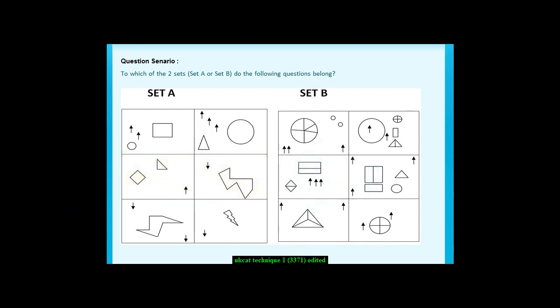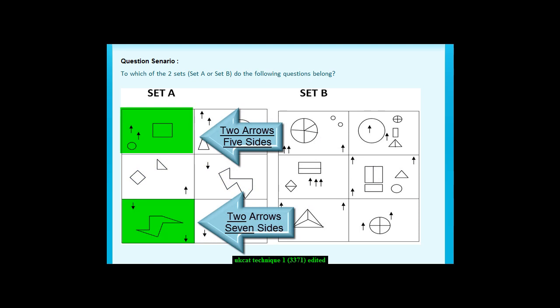You would then look for a relationship between the number of arrows and the number of sides of the shapes. Again, there is no relationship.